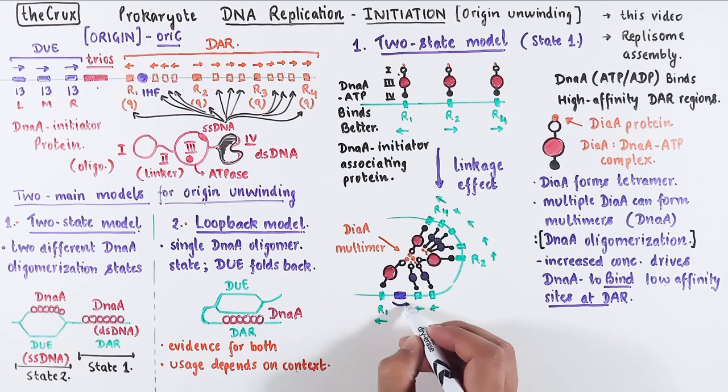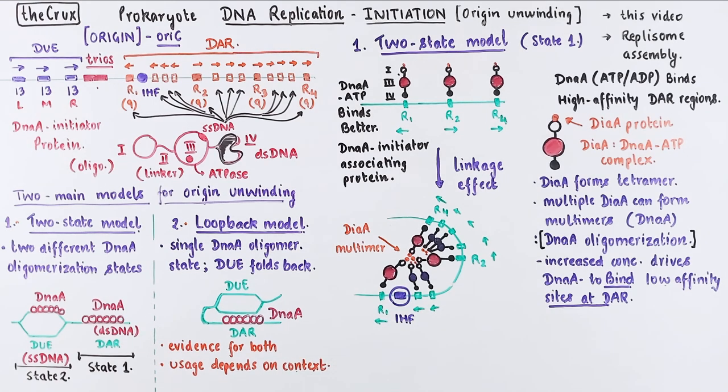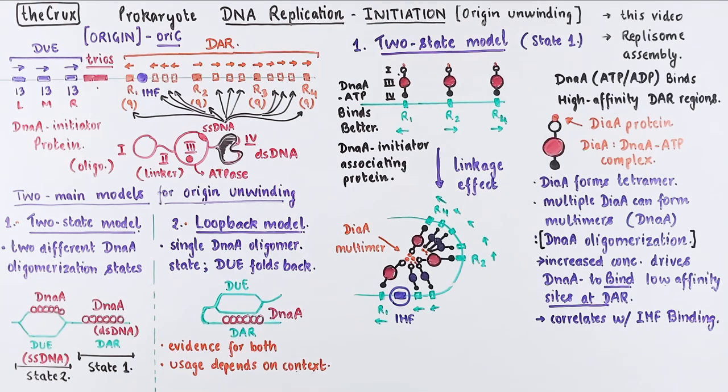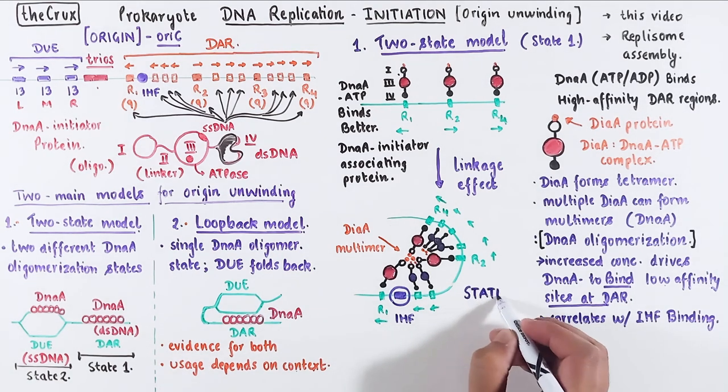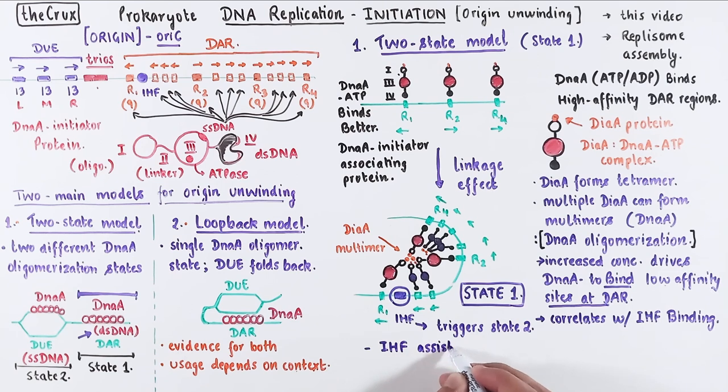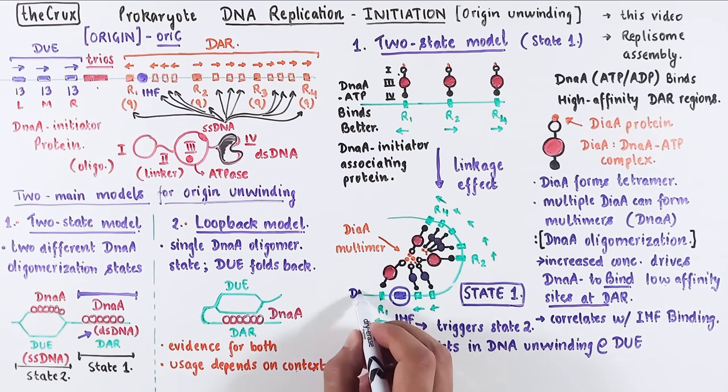This binding of DnaA complexes at DAR also correlates with the binding of IHF at the IHF recruiting sequence near region 1. And this completes the state 1 of the two-state model, which is based on the double-stranded DNA recognition and binding. The transition now to the next state depends on the IHF, which assists in the DNA unwinding of the DUE region, which is just upstream of the R1 site.